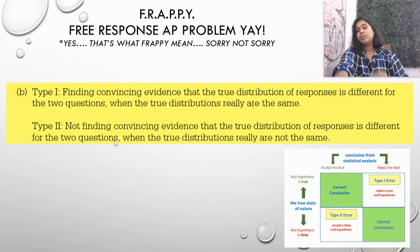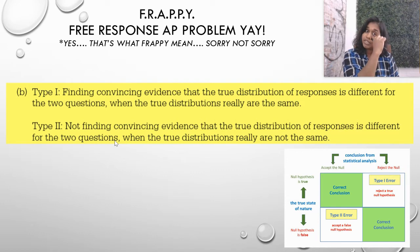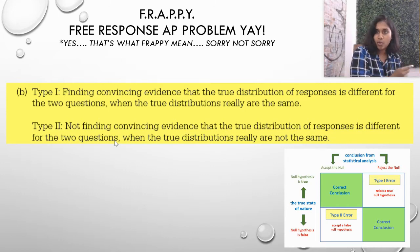So type 1 would be that we found convincing evidence that the true distribution of responses was different, but that's not actually true. The true distributions were really the same. Type 2 would be that we did not find convincing evidence that they were different, but that's actually not true. The true distributions really weren't the same. So those would be the two type errors with context from the question.